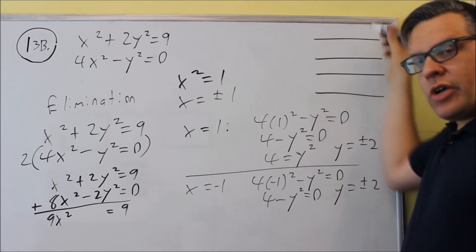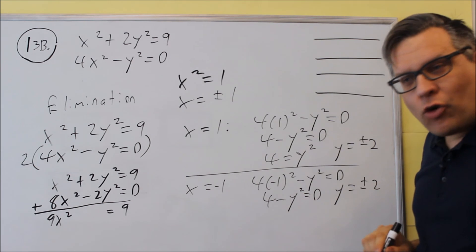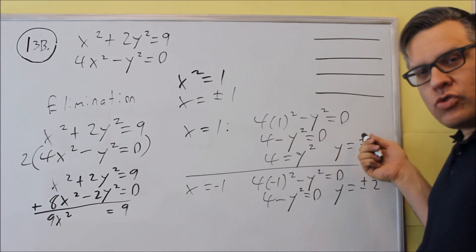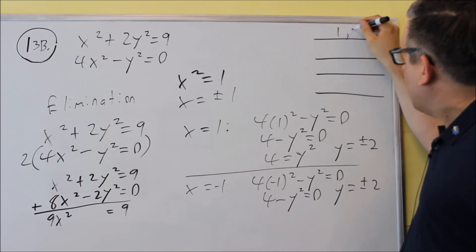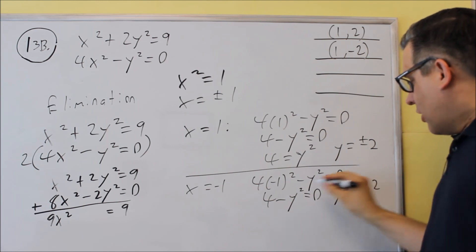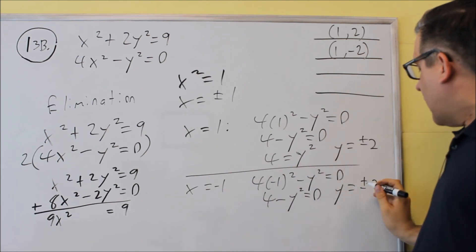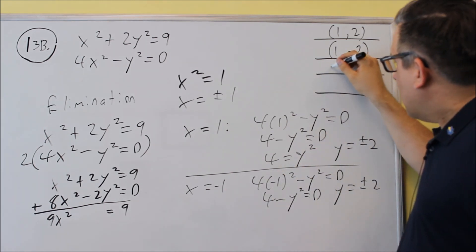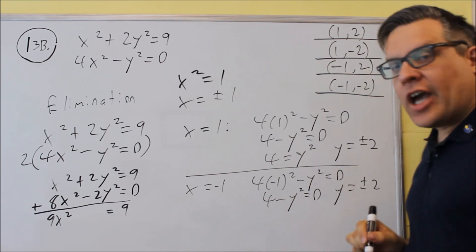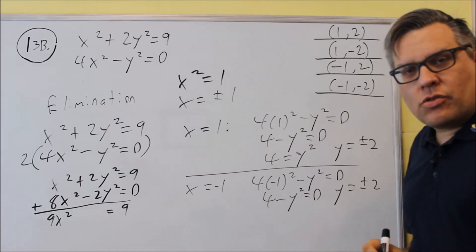So now we just have to write our answer. We've got these four blanks here, so this time there's four different answers. When x is one, I've got two and negative two. So here's one comma two, one comma negative two. Down here, when x is negative one, I get two and negative two. So I get negative one comma two, and negative one comma negative two. So that gives me all four of my solutions.